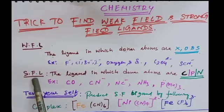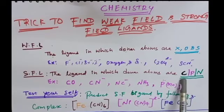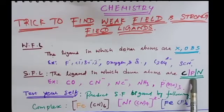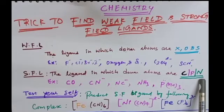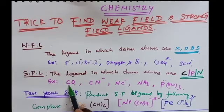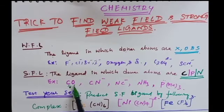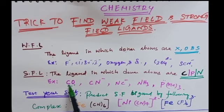Next, let's see about strong field ligands. The ligand in which the donor atom is carbon, phosphorus, or nitrogen — that is a strong field ligand. For example, carbonyl (CO): in this, carbon acts as the donor atom, which donates the electron to the central metal atom. Don't confuse, students — in CO, carbon only acts as the donor atom, so it is a strong field ligand.